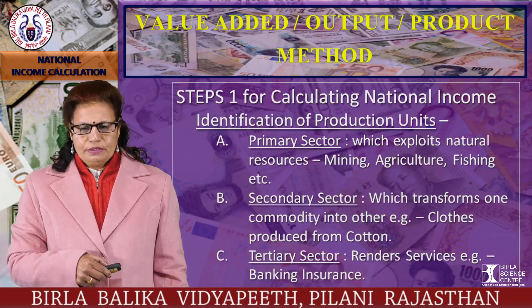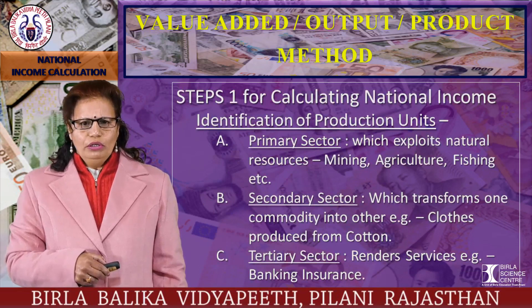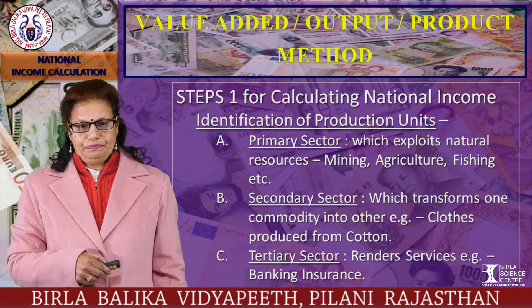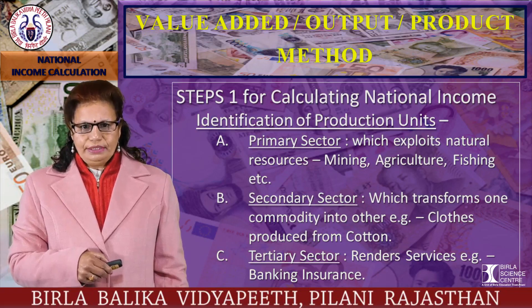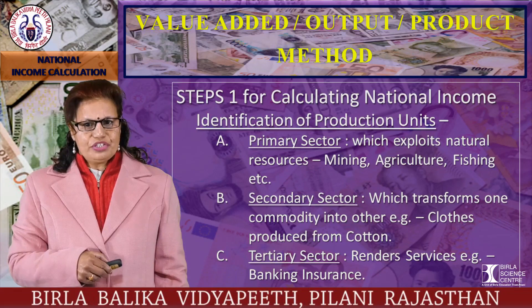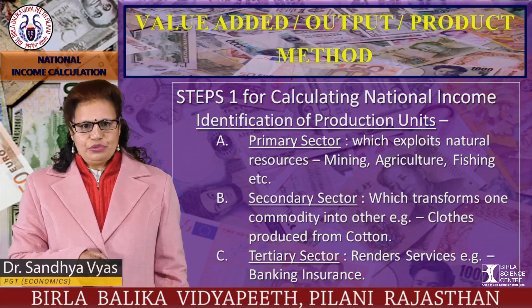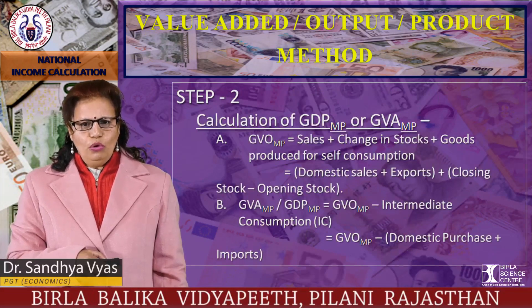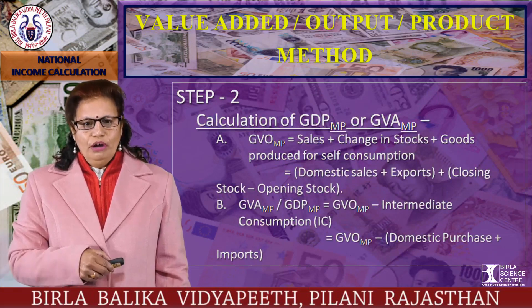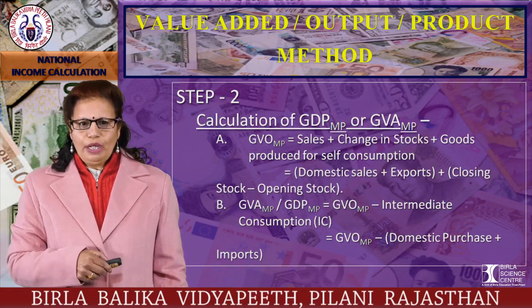There are steps to calculate national income by the value-added method. Step 1: identify the production units. There are three sectors — primary sector, which exploits natural resources such as mining, agriculture, and fishing; secondary sector, which transforms one commodity into another, for example clothes produced from cotton; and tertiary sector, which renders services, for example banking and insurance. Step 2: apply the formula. The value-added method is calculated at market price.